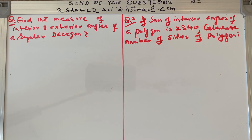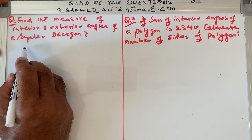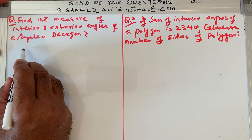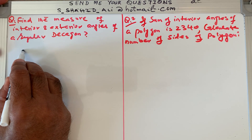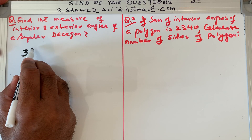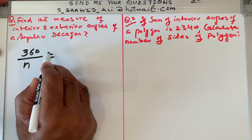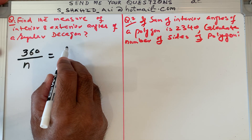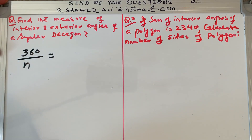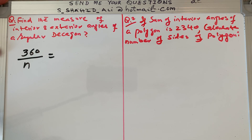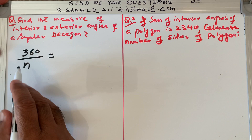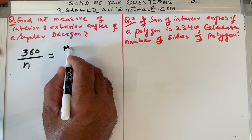This question can be solved by a simple formula. If you want to find the measure of one exterior angle of a polygon, you use the formula 360 divided by n, where n is the number of sides. So 360 divided by n gives the measure of one exterior angle.